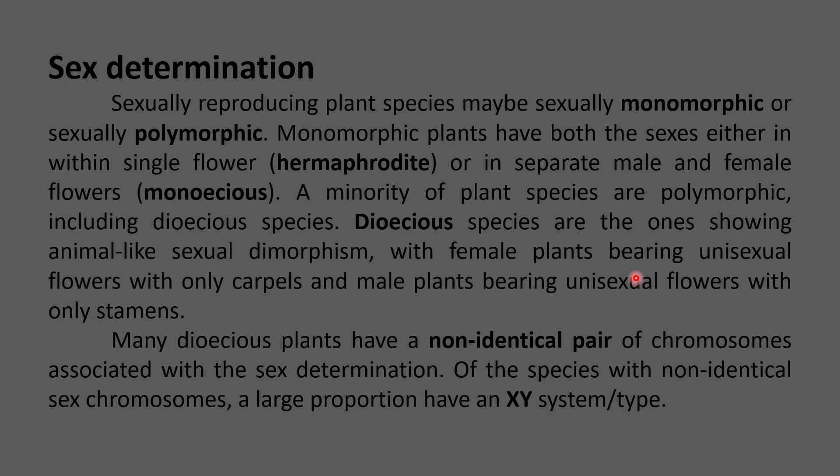Of the species with non-identical sex chromosomes, a large proportion is found to have the XY system of sex determination. For example, the dioecious plant Melandrium album has 22 chromosomes in the diploid condition per cell. Of these 22 chromosomes, 20 are autosomes (somatic chromosomes) and two are allosomes (sex chromosomes). These allosomes are XX in females and XY in males — this is the chromosomal basis of sex determination.